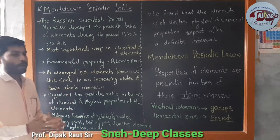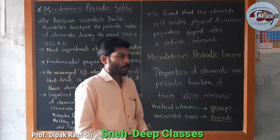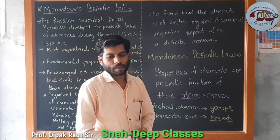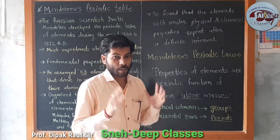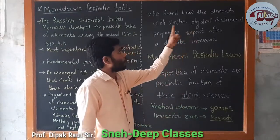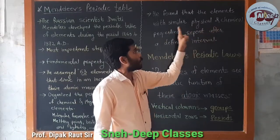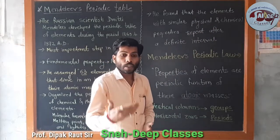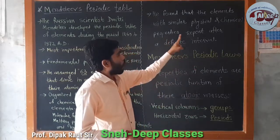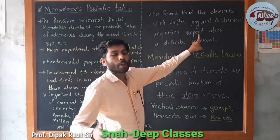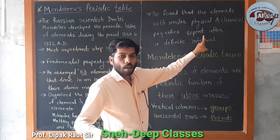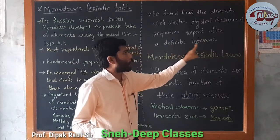So he organized the table. When he organized it, Mendeleev found that elements with similar physical and chemical properties repeat after a definite interval — repeat after a definite interval.